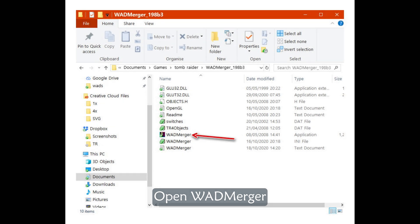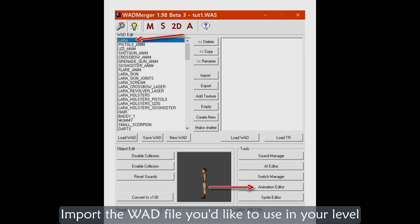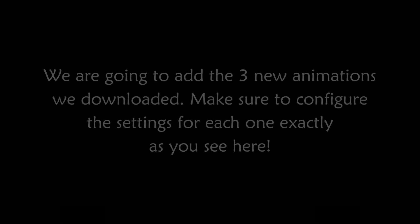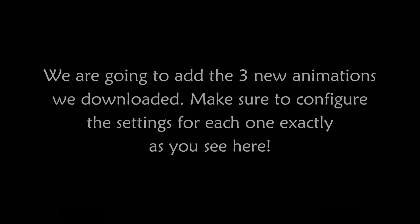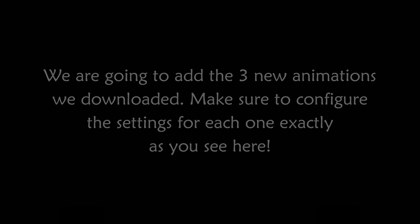Open WOD Merger. Import the WOD file you'd like to use in your level. We are going to add the 3 new animations we downloaded. Make sure to configure the settings for each one exactly as you see here.